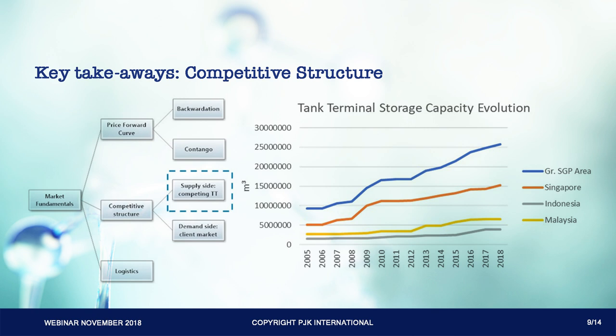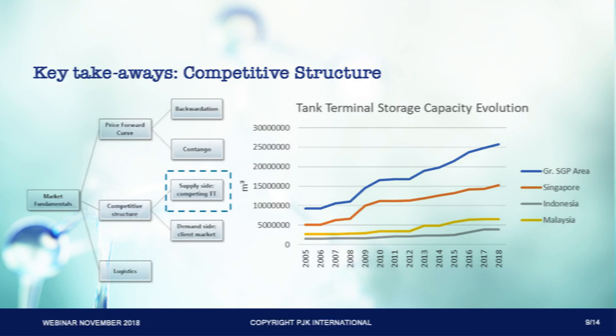Malaysia and Indonesia have smaller increments, with especially high growth pace between 2008 and 2010. This surge in capacity was the result of a prolonged period of contango between 2005 and 2011, which created demand for tank capacity. After 2011, market circumstances were less favorable for tank terminals, but due to the fact that construction had already begun, much expansion capacity was still added after this date.